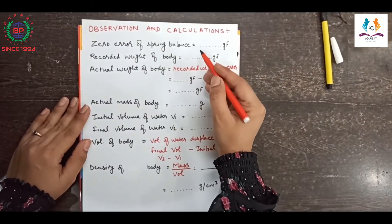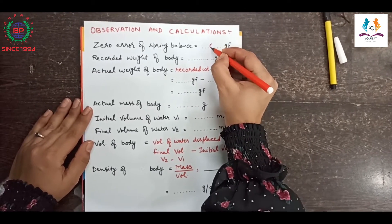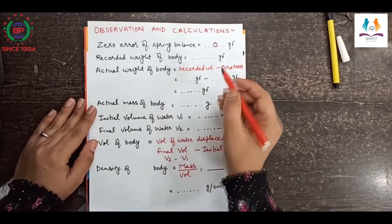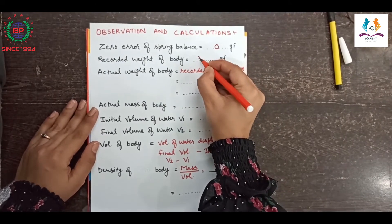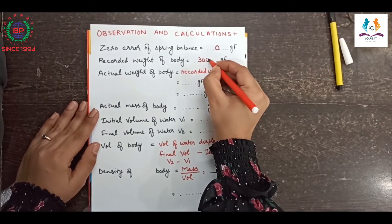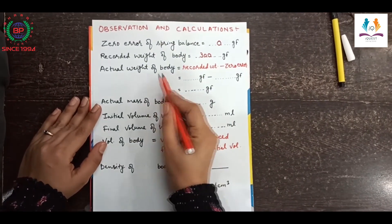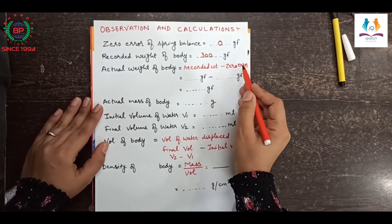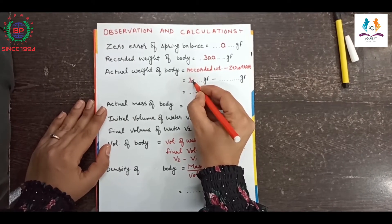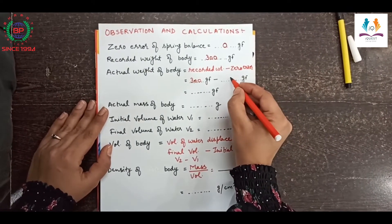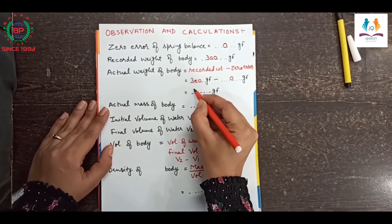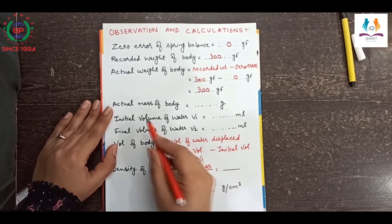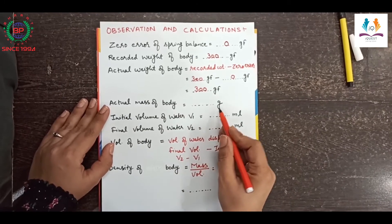Now let's note down our observations. The zero error of the spring balance has been adjusted to zero. The recorded weight of the body was 300 gram force. The actual weight of the body can be calculated using the formula: recorded weight minus zero error, so 300 gram force minus zero gram force equals 300 gram force.